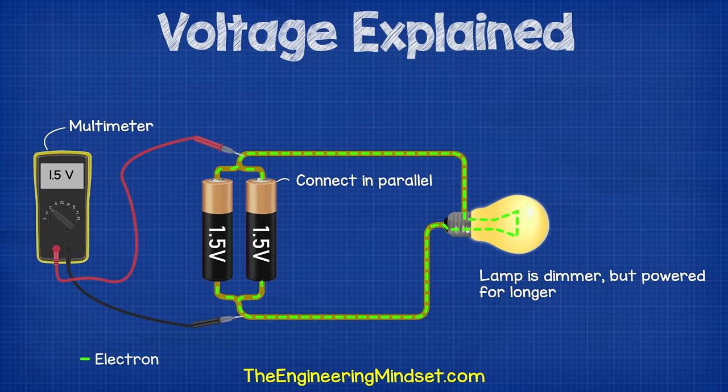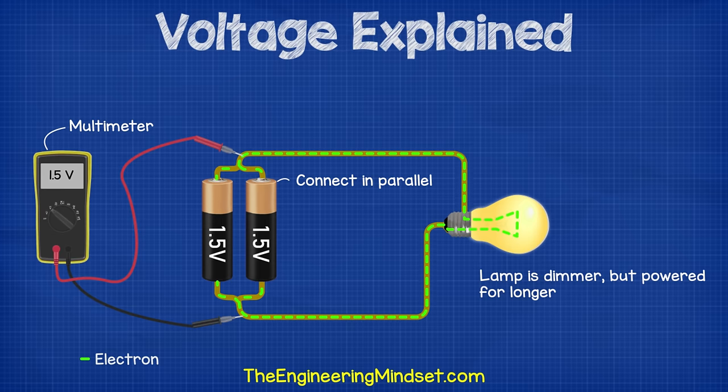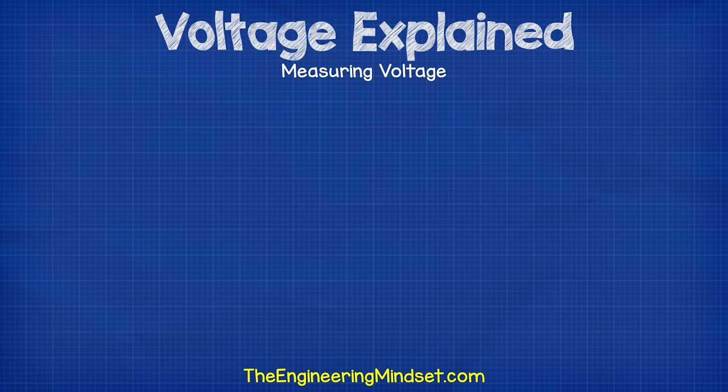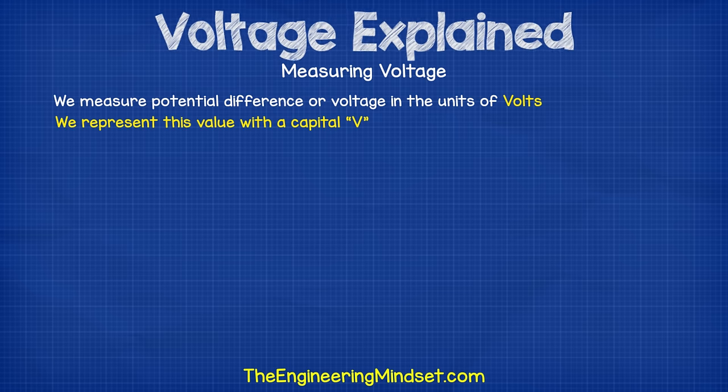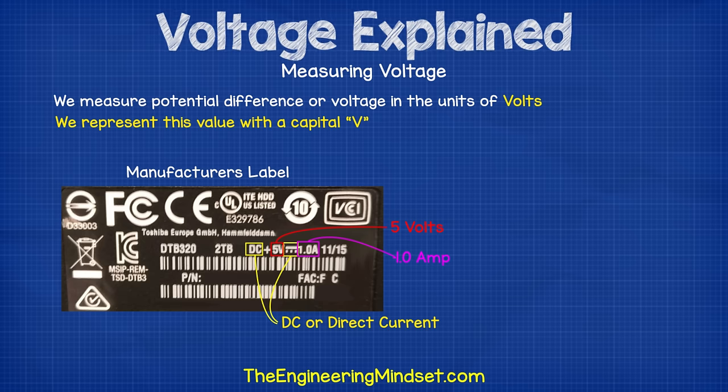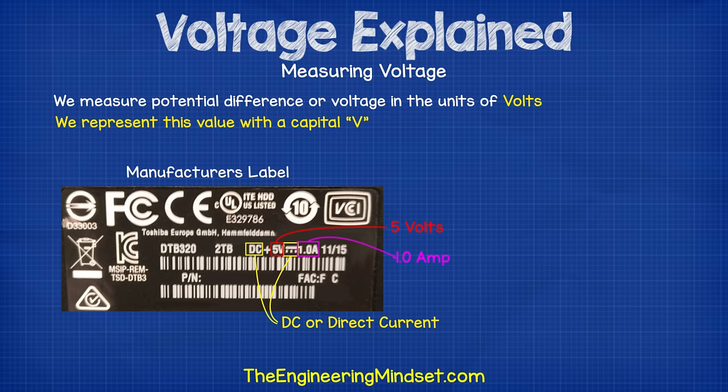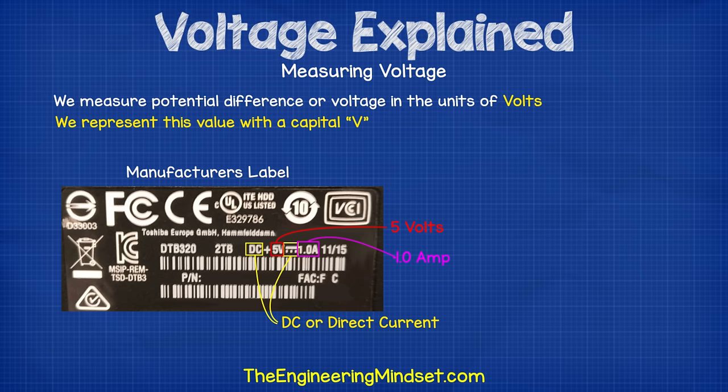We've covered this in much more detail within our electrical circuit series. Do check that out. Links are in the video description below. We measure the potential difference of voltage with the units of volts, and we use the symbol of a capital V to show this. If you look on your electrical appliances, you will see a number next to a capital V, indicating how many volts the product is designed for. In this example, the manufacturers of this USB hard drive are telling us that the device needs to be connected to a five volt DC or direct current supply, and it needs one amp of current for the device to work.